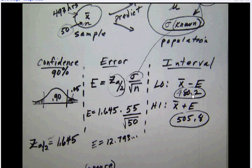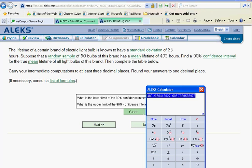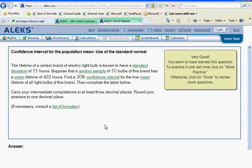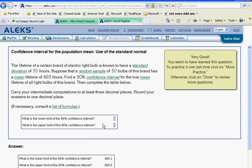Let's put that into ALEKS now. The low end 480.2, the high end 505.8. Let's check it. This is the confidence interval for the population mean with sigma known.